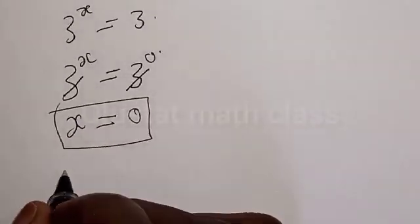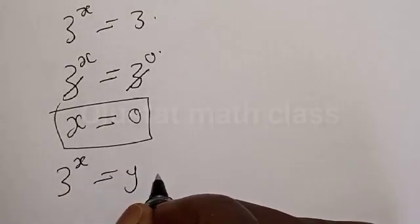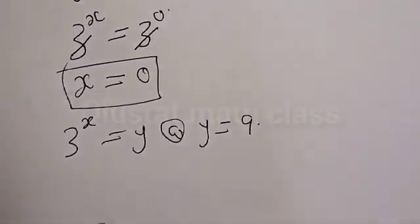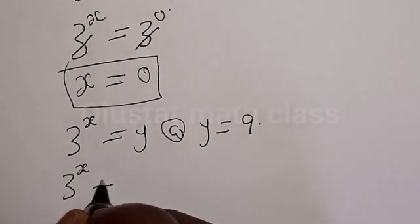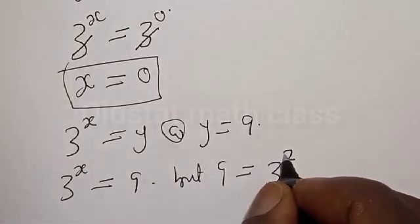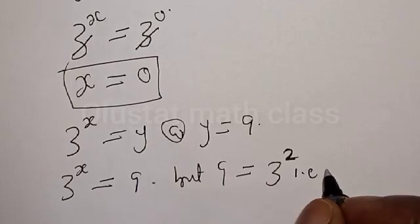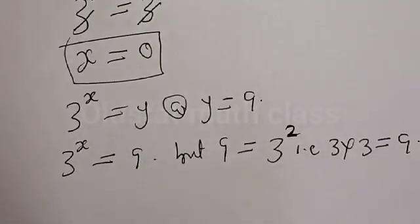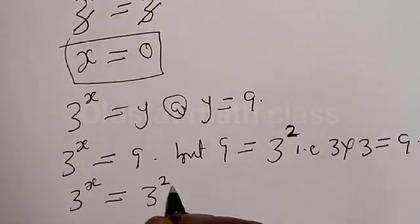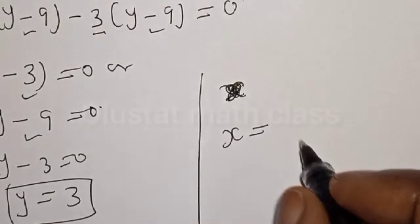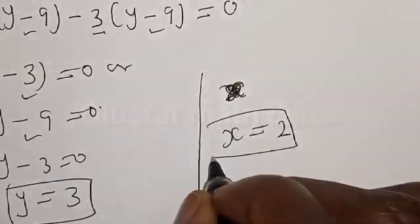Also, at Y equals 9, we have 3 raised to the power x equals 9. Since 9 equals 3 times 3 equals 3 squared, we can write 3 raised to the power x equals 3 squared. They have the same base, so the exponents are equal. Therefore x equals 2. That is the second value of x.